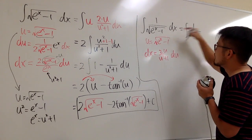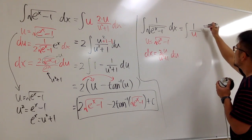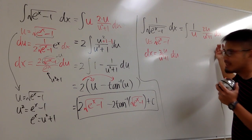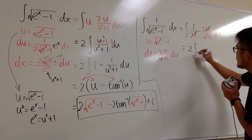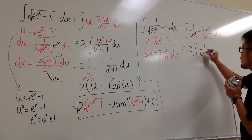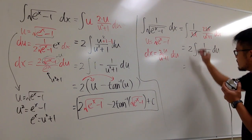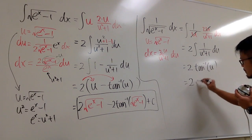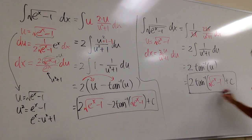Taking the second integral into the u-world: we have 1 over u on the bottom, times dx, which is 2u over u squared plus 1, du. The u and u cancel, so we just have 2 times the integral of 1 over u squared plus 1, du. That's simply 2 times the inverse tangent of u. Back-substituting, the final answer is 2 times the inverse tangent of the square root of e to the x minus 1, plus C.